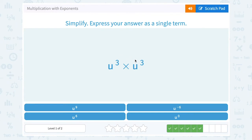u to the 3rd times u to the 3rd. Well again, the rule is add the exponents. So this would be u to the 3 plus 3 or u to the 6th power.